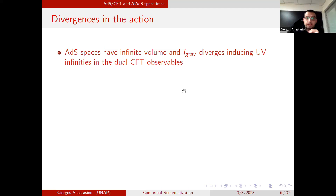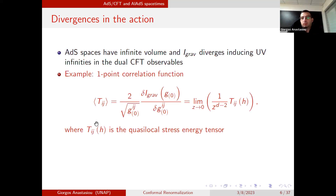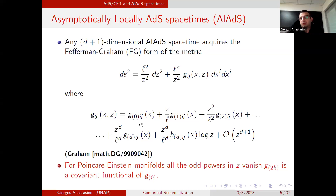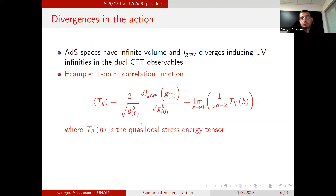These are infrared divergences in the gravitational action, which in the holographic dictionary correspond to UV infinities for CFT observables — for instance the holographic stress-energy tensor, which is the observable conjugate to the source g₀. The stress-energy tensor is expressed as a limit at z=0 of the quasi-local stress-energy tensor with a specific factor. Exactly as the gravitational action diverges, all quantities derived from it will also be divergent.